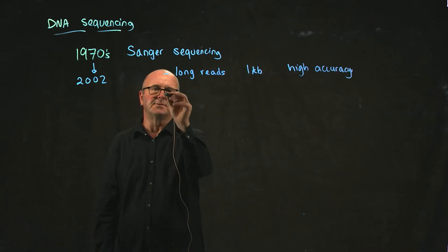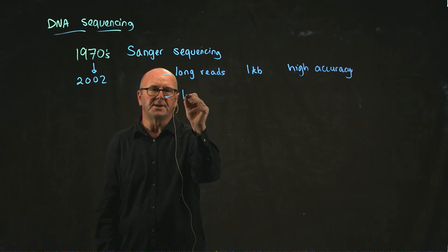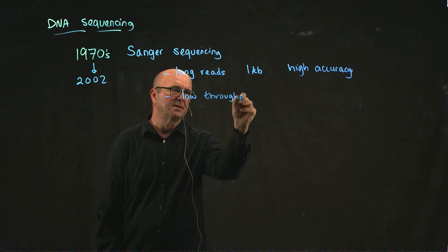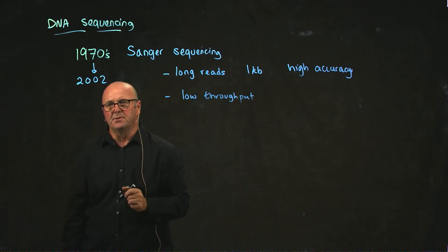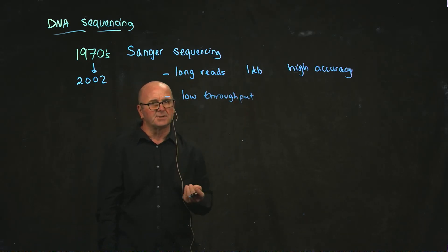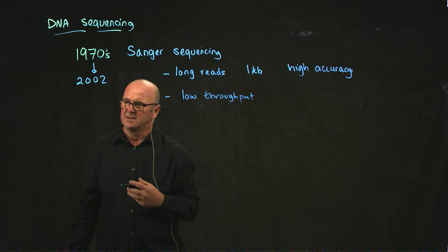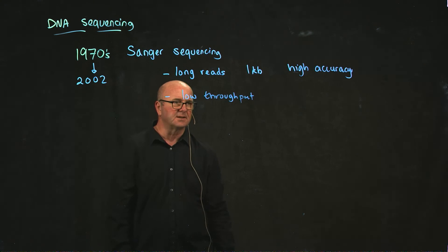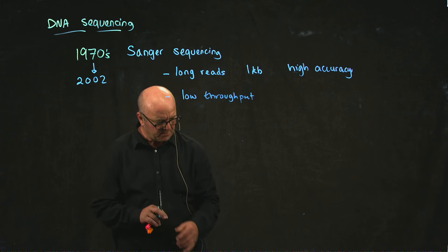The disadvantage of Sanger sequencing is that it's pretty low throughput. And so you can do 394 sequences at once. 394 sounds like a lot, but as we'll see with the newer sequencing technologies you can get many millions of sequences or billions of sequences at once.